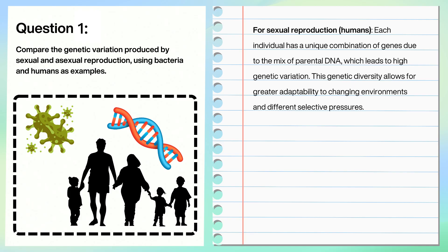Now let's go through the answer. For sexual reproduction in humans, each individual has a unique combination of genes due to the mix of parental DNA, which leads to high genetic variation. This genetic diversity allows for greater adaptability to changing environments and different selective pressures.